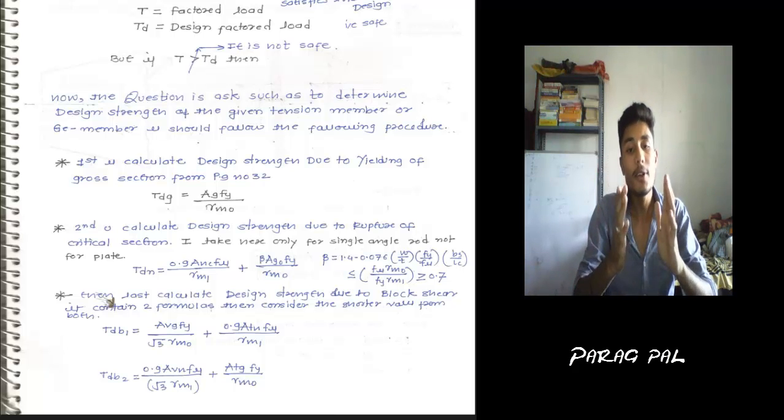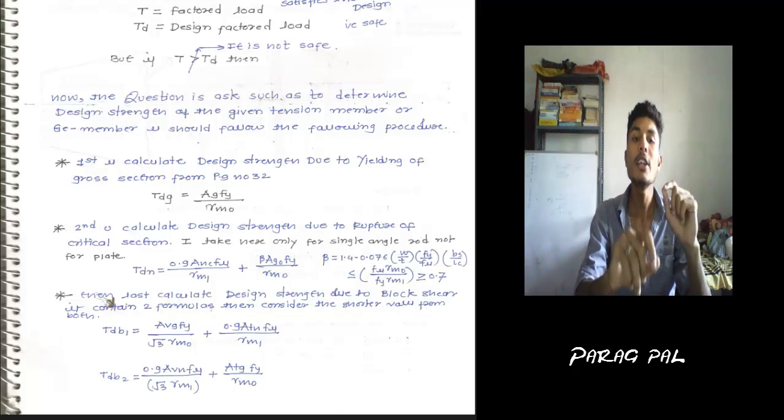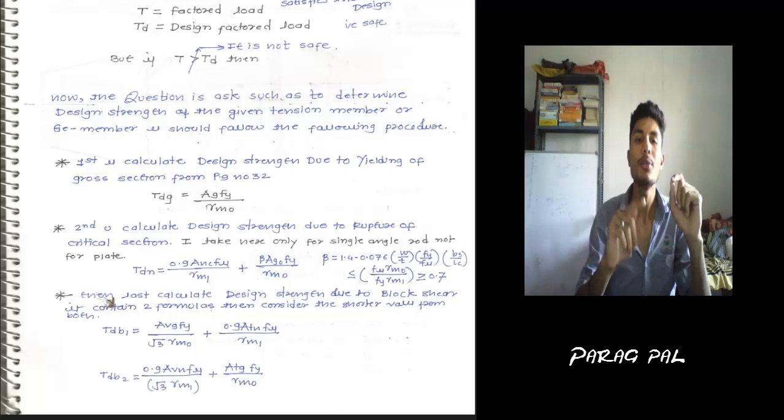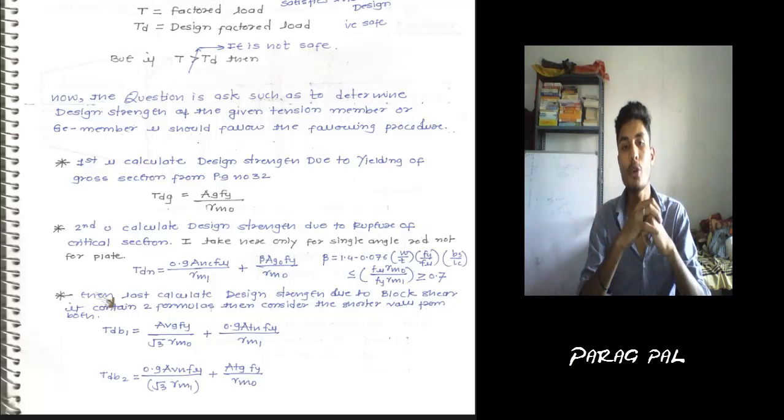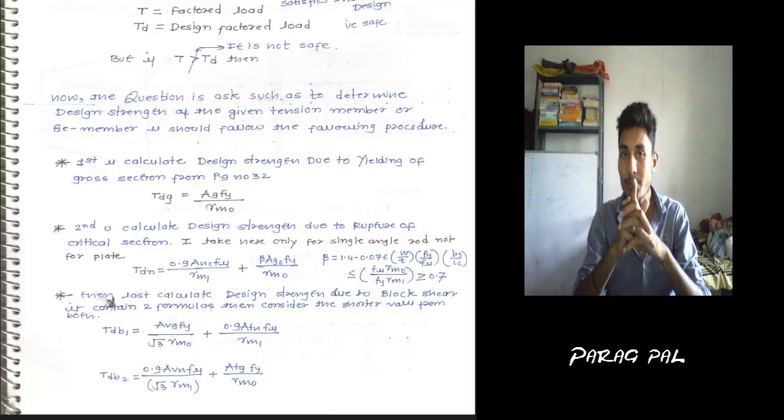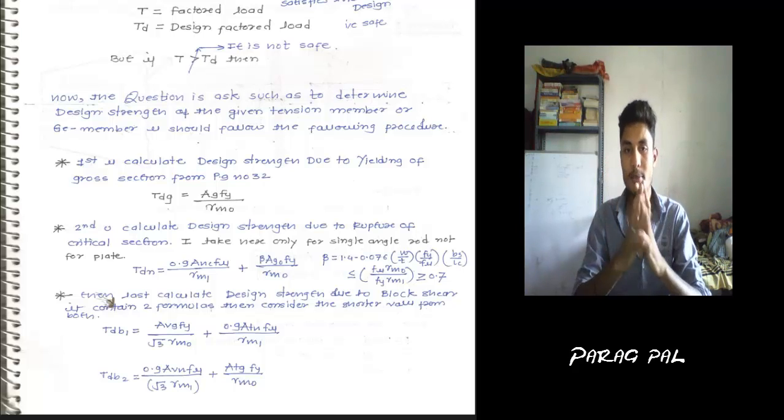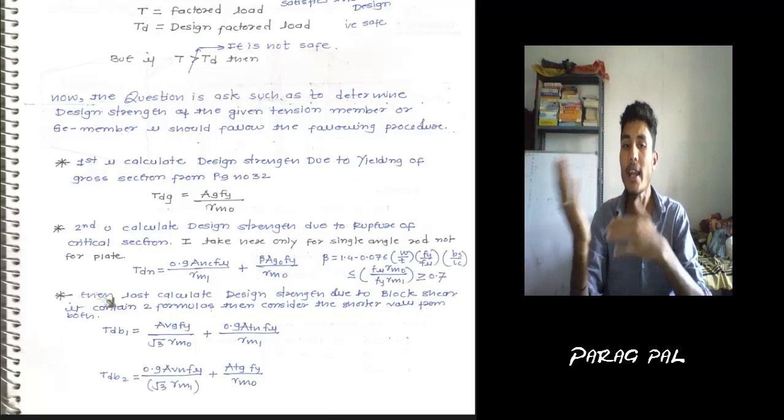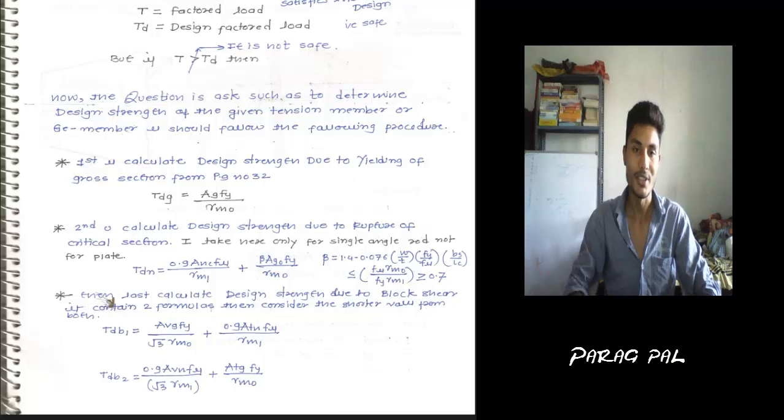During calculation of TDG, TDN and TDB1, TDB2 - you have 4 values. Take the minimum of TDB1 and TDB2, so these are 1, 2 and 3. Take minimum value of these 3. This is your TD. Check this TD with the given factored load or service load which is multiplied by 1.5 to make the working factored load. It always satisfies the condition that T is less than or equal to TD. Then and only then, you get marks in examination - that this load is serviceable and the load can withstand all the pressure or load coming around. This is along with the design procedure.